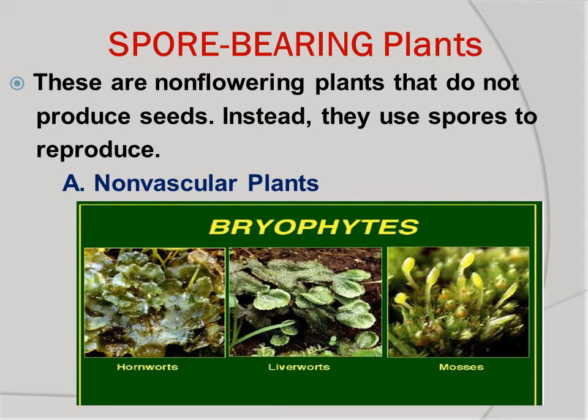Examples of spore-bearing plants that are non-vascular are the mosses, the liverworts, and the hornworts. These three are collectively known as bryophytes. They are non-vascular plants that reproduce through spores.